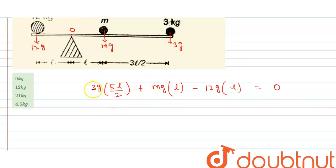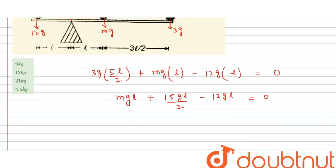From here, 3 times 5 is 15L/2, so we have MgL plus 15gL/2 minus 12gL equals zero. MgL plus 15gL/2 minus 12gL - if you take LCM of 2, that's 15gL minus 24gL over 2, which is minus 9gL/2 equals zero.